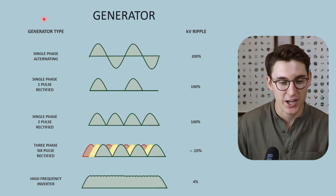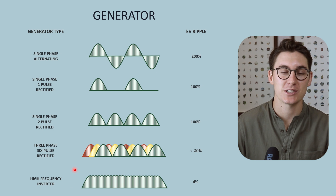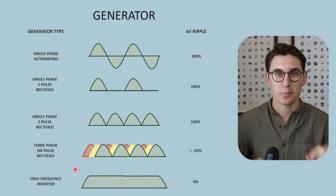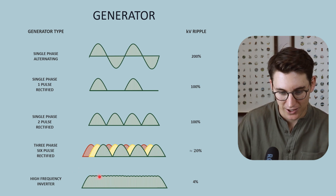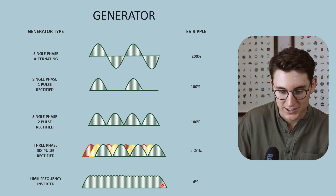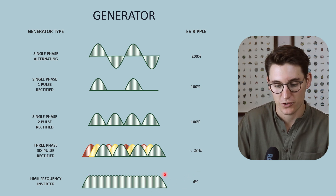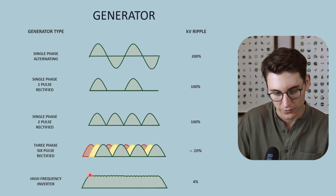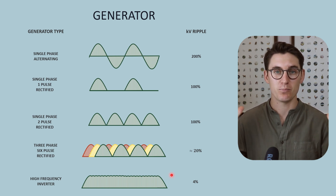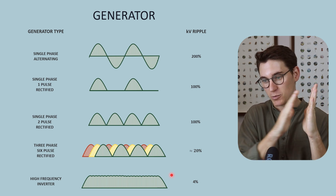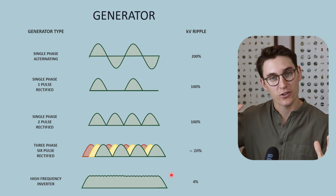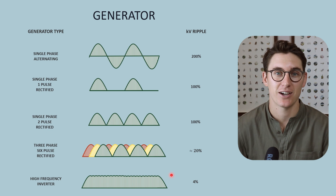We can also use a generator known as a high frequency inverter, which places multiple phases of current over one another, getting those peaks very close together. With these peaks close to one another and currents rectified, we achieve a very small voltage ripple — normally less than 4% voltage ripple. Our potential between cathode and anode is much more consistent, giving us a much more constant flow of electrons towards our anode and a much more constant stream of X-rays leaving our X-ray machine.